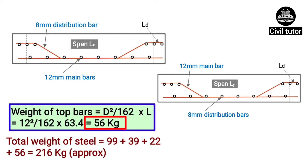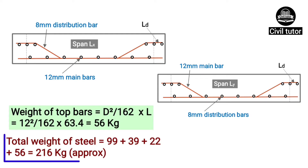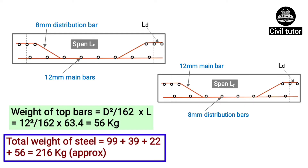The total weight of steel required for this slab equals the sum of: main bars (99 kg), distribution bars (39 kg), top bars along LX (22 kg), and top bars along LY (56 kg). The total weight of steel is 216 kg, which is the quantity of steel required for the construction of this two-way slab.